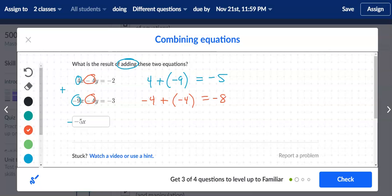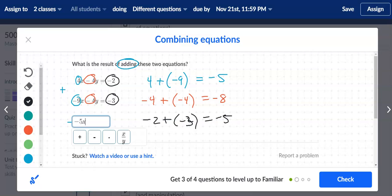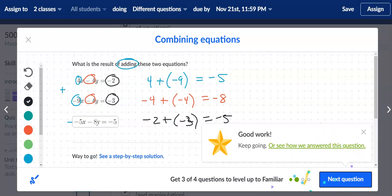So I'm going to put a negative 8 in. And I'm going to just wait and do these last two before I enter my answer. So then I have a negative 2 plus a negative 3, which is negative 5. So my y term is negative 8. My constant is negative 5. So negative 8y equals negative 5. Everything looks good. Awesome.